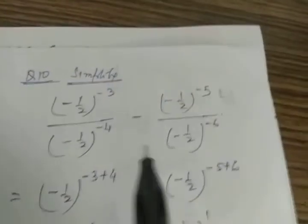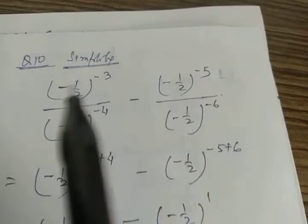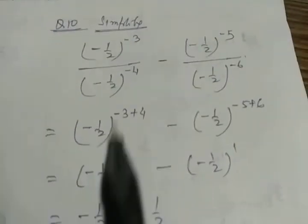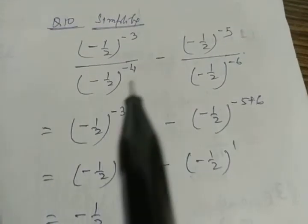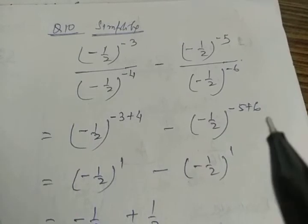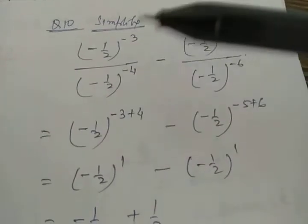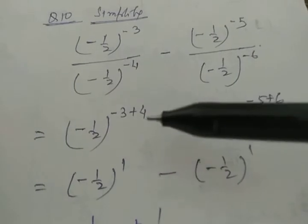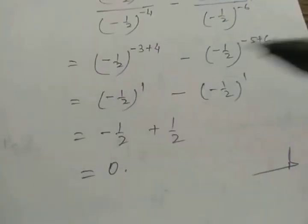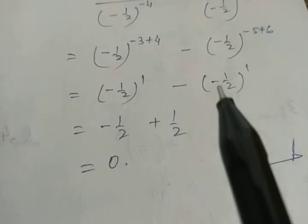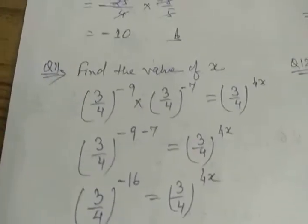Next problem: all bases are same (-1/2). Using division, powers are subtracted: minus 3 plus 4 gives power 1 and minus 5 plus 6 also gives power 1. So each part simplifies to -1/2. But since there is a minus between them: (-1/2) minus (-1/2) — a minus and a minus makes plus — so (-1/2) + (1/2) = 0. The result is 0.